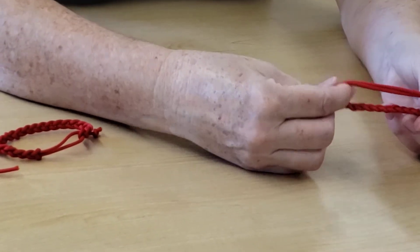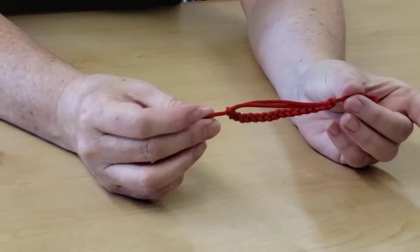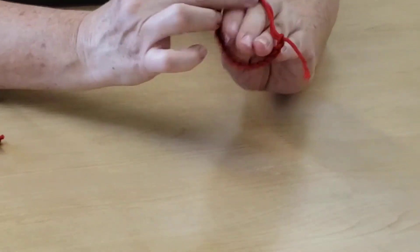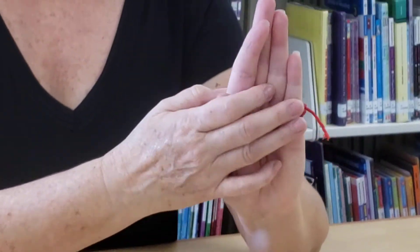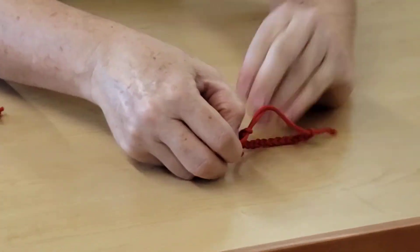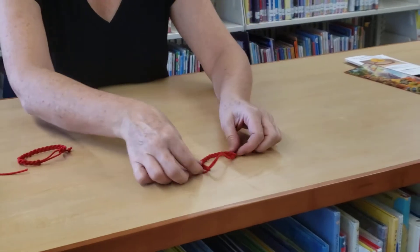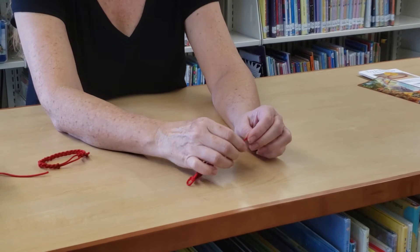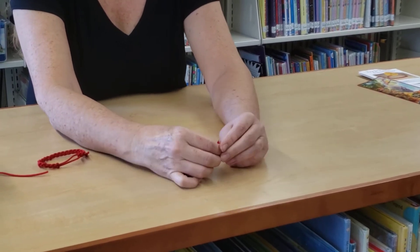And then the last thing you're gonna do is you're gonna make sure it fits over your wrist. I've already trimmed this one, but if this is really long, you're gonna slide this over, measure how long you want it, and you're gonna cut off any excess.